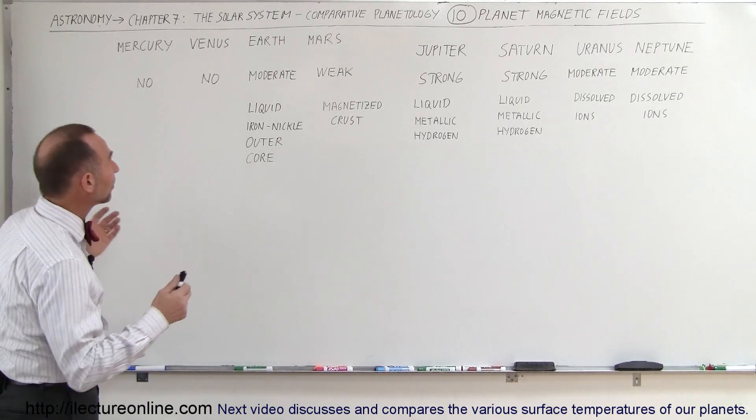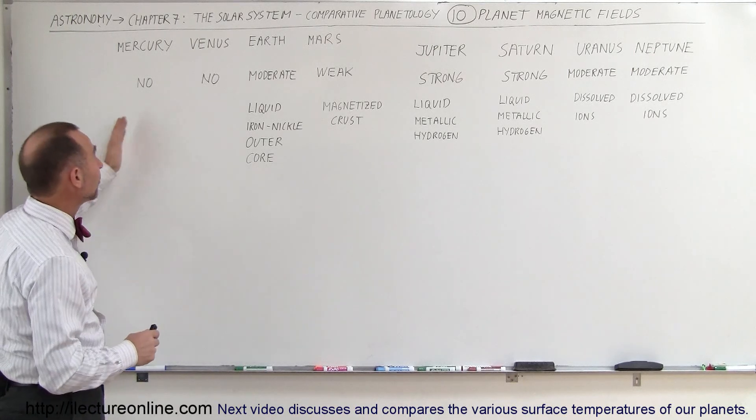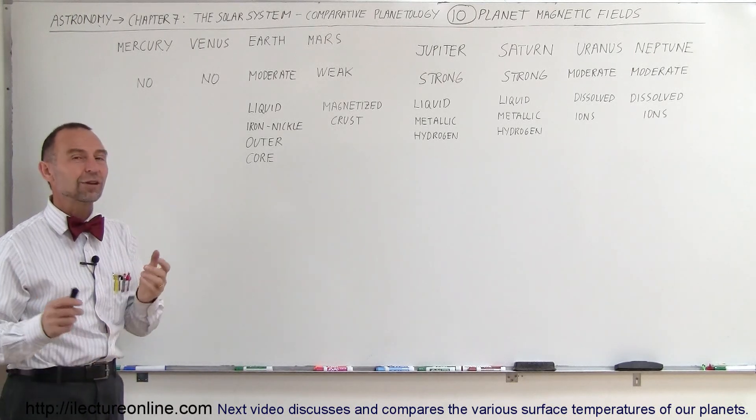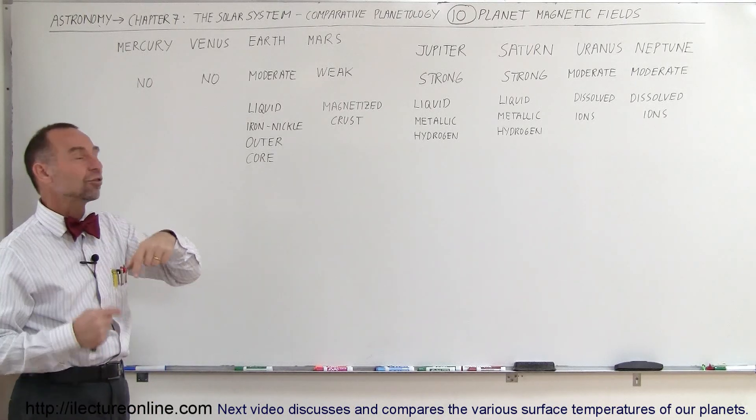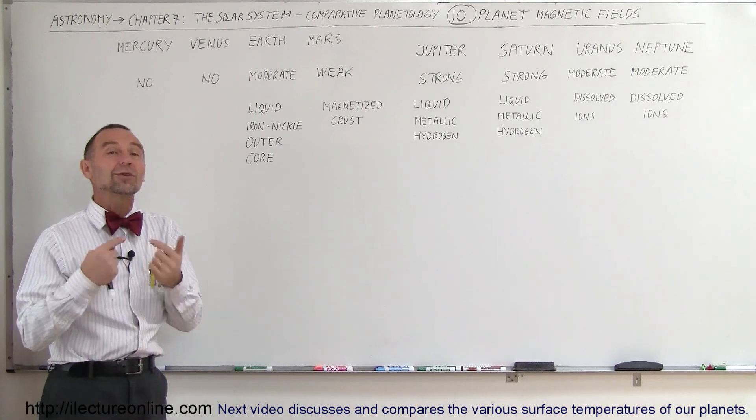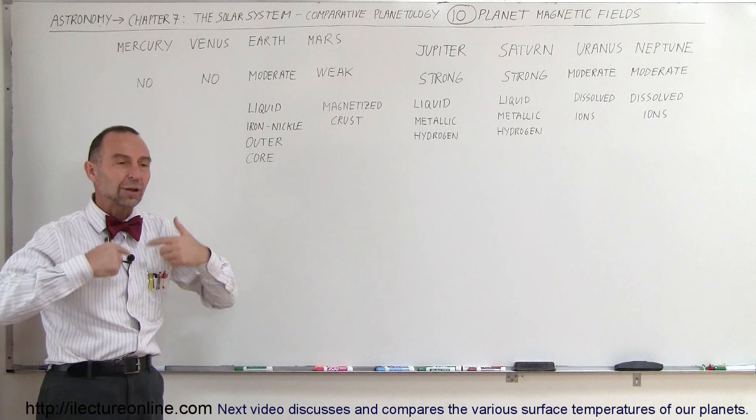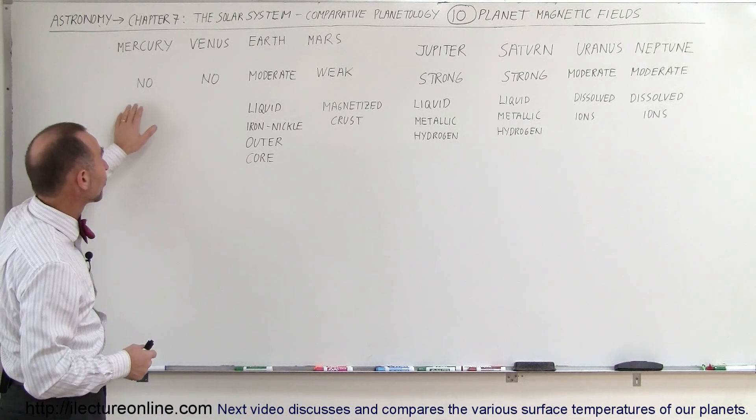So when we look at these planets, all of a sudden we realize there's a good explanation why Mercury and Venus have no magnetic field because their rotational period is very slow. It takes Mercury 58 days to make one rotation on its axis and it takes Venus 243 days to make one rotation on its axis.